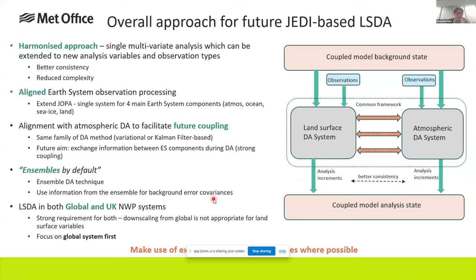Let's look at what we're planning. The schematic here is what we'd like to aim for — a much simpler, more streamlined system compared to the current one. First, we want a harmonized approach with a single multivariate analysis rather than different methods for different variables. That gives a more consistent treatment of surface variables, reduces system complexity, is easy to maintain, and increases flexibility.